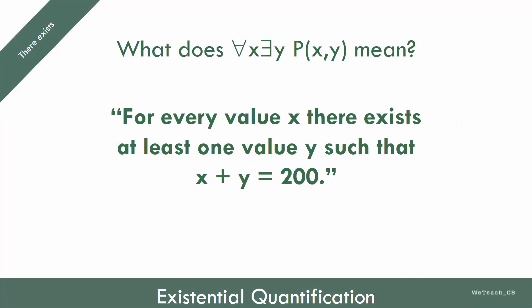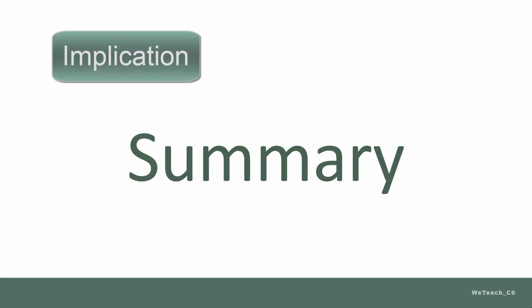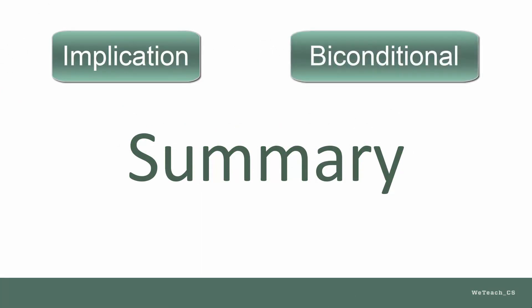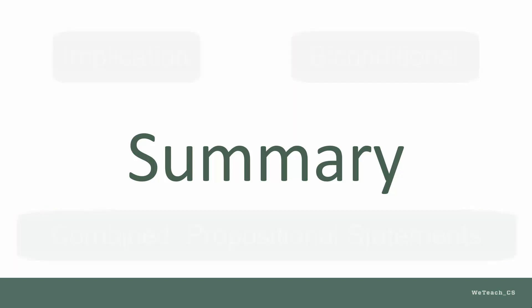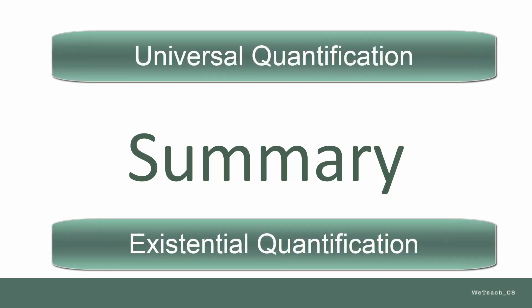In this lesson, we reviewed the implication and the biconditional operations, which combine propositional statements. We examined how truth tables help us to visualize the results of these combinations. We also reviewed universal and existential quantifications, studying a few examples of each. These concepts are an important part of discrete math, and it is important that you have a good grasp on these fundamental ideas.